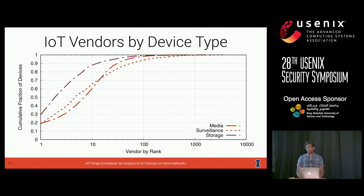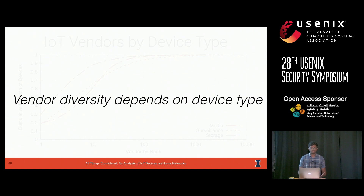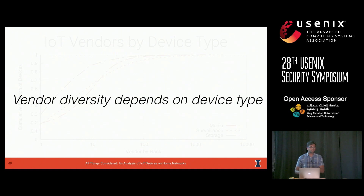Conversely, other device types are far more heterogeneous. Media devices are the most heterogeneous, with the top 10 manufacturers accounting for only 60% of all devices, and surveillance devices are a close second. For example, Hikvision, a Chinese CCTV manufacturer, accounts for 18.4% of all surveillance cameras globally with a strong presence in almost every region. Vendor diversity also depends on region: in Western Europe, the most popular media vendors are French companies like Sagecom and Free making set-top boxes and DVRs, while in the US they are Google, Amazon, and Apple. Ultimately, this points to a complex ecosystem with thousands of actors and regional device differences.